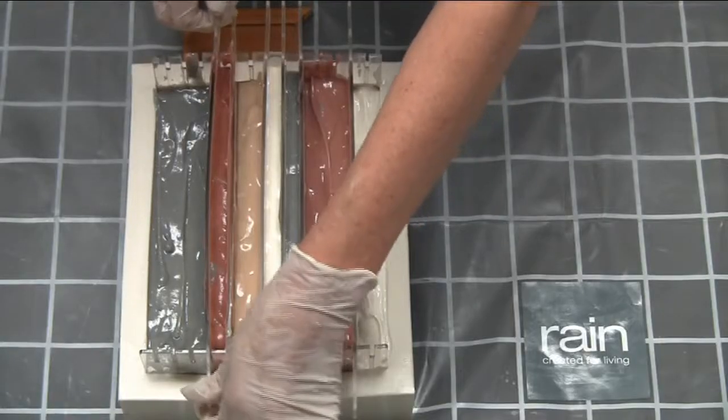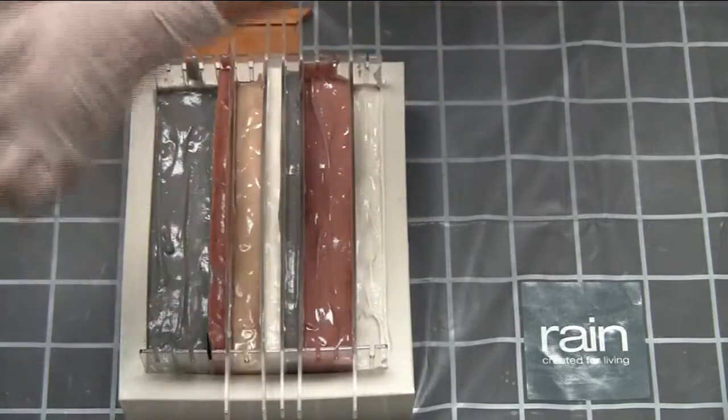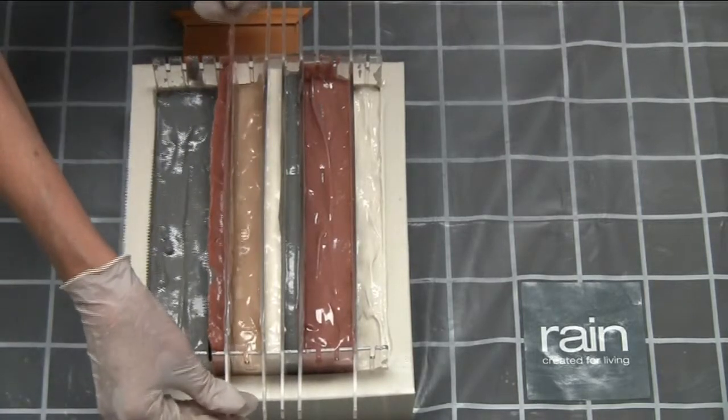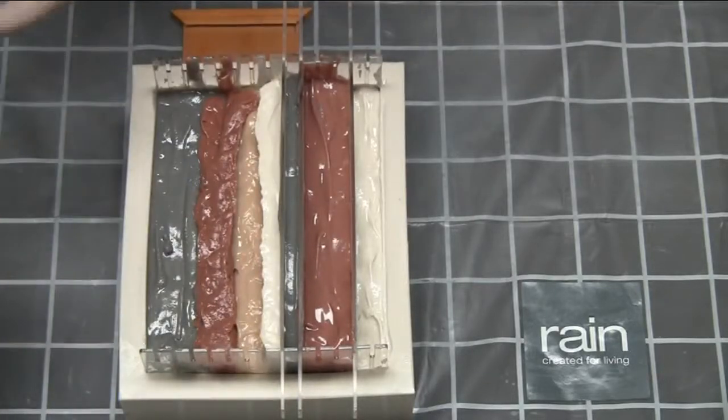When the mold is full, you're going to need to remove all the divisions. Pull them out gently.